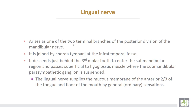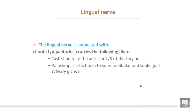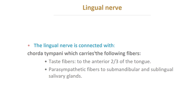The lingual nerve arises as one of the two terminal branches of the posterior division of the mandibular nerve. It is joined by the chorda tympani in the infratemporal fossa, descends just behind the third molar tooth to enter the submandibular region, and passes superficial to the hyoglossus muscle, where the submandibular parasympathetic ganglion is suspended from it. The lingual nerve supplies the mucous membrane of the anterior two-thirds of the tongue and the floor of the mouth by general sensation. Through its connection with the chorda tympani, it carries taste fibers to the anterior two-thirds of the tongue and parasympathetic fibers to the submandibular and sublingual salivary glands.